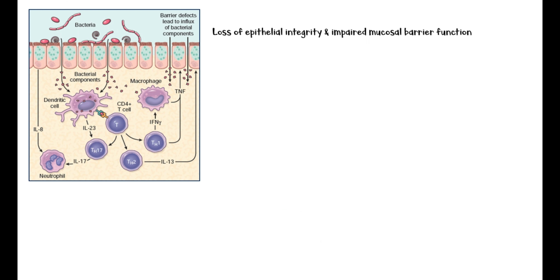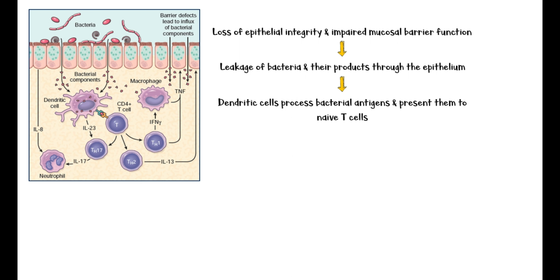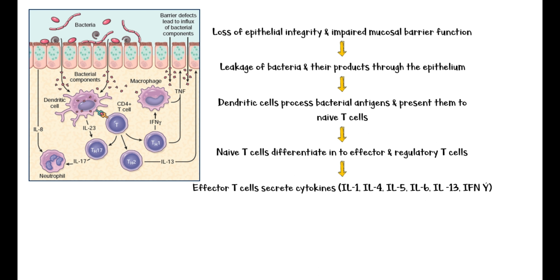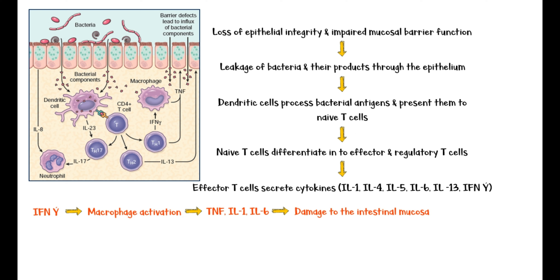Due to the loss of epithelial integrity and impaired mucosal barrier function, bacteria and their products leak through the epithelium. Dendritic cells process these antigens and present them to naive T cells, which differentiate into effector and regulatory T cells. Effector T cells secrete various cytokines including interleukins and, most importantly, gamma interferon, which causes macrophage activation. Activated macrophages then secrete more cytokines including tumor necrosis factor alpha, interleukin-1, and interleukin-6, which cause direct damage to the intestinal mucosa and trigger recruitment of more leukocytes in a vicious cycle, ultimately causing more epithelial damage.